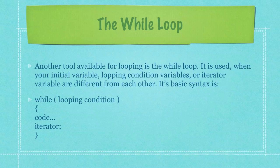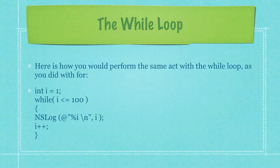Then you would have an opening curly brace followed by your code and then finished off with the iterator. Here is how you would perform the same act with the while loop as you did previously, which would be simply just creating a while loop that would print out the numbers 1 through 100.